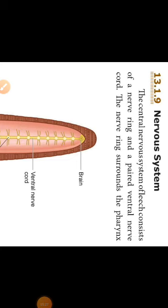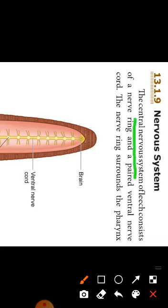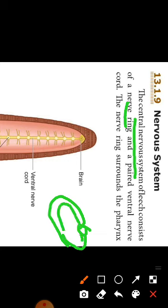Next topic is nervous system. In leech, central nervous system has nerve ring and also has paraventral nerve cord.